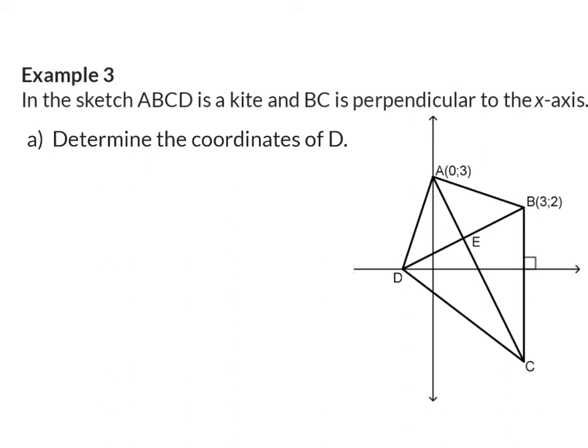In Example 3, we will again see how important it is to know the properties of quadrilaterals learned in Grade 10. In the sketch, ABCD is a kite, and BC is perpendicular to the x-axis. Because ABCD is a kite, we can add several properties to the sketch: two pairs of adjacent sides are equal in length, one diagonal is bisected by the other diagonal, and the two diagonals intersect perpendicularly.